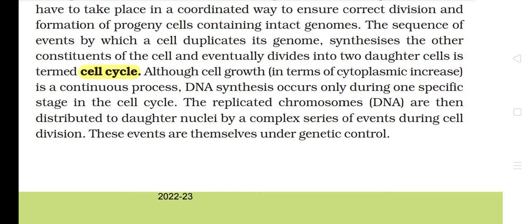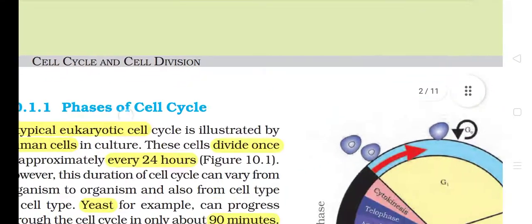Although cell growth in terms of cytoplasmic increase is a continuous process, DNA synthesis occurs only during one specific stage in the cell cycle. The replicated chromosomes are then distributed to daughter nuclei by a complex series of events. During cell division, these events are themselves under genetic control.